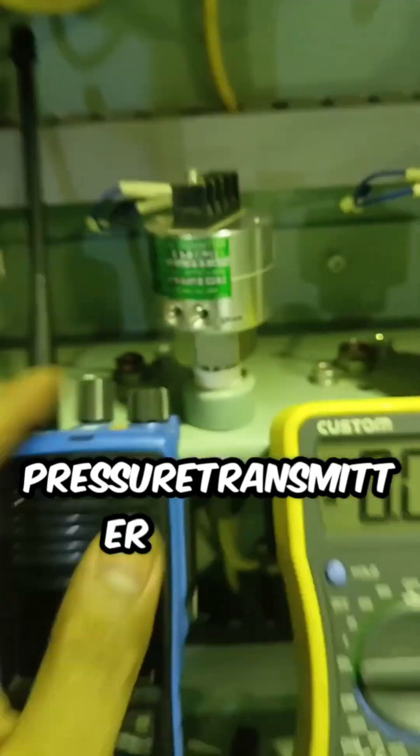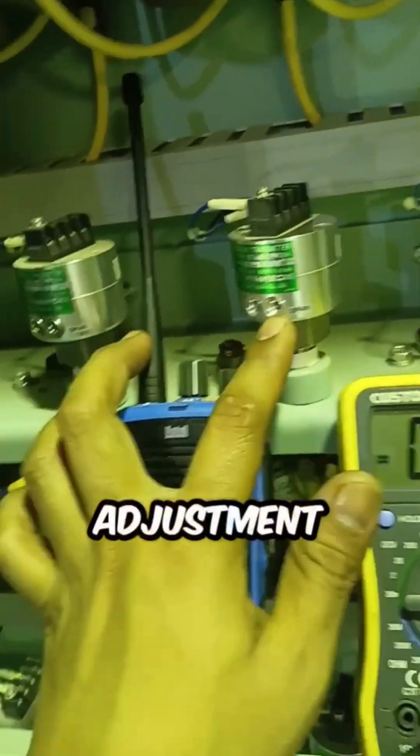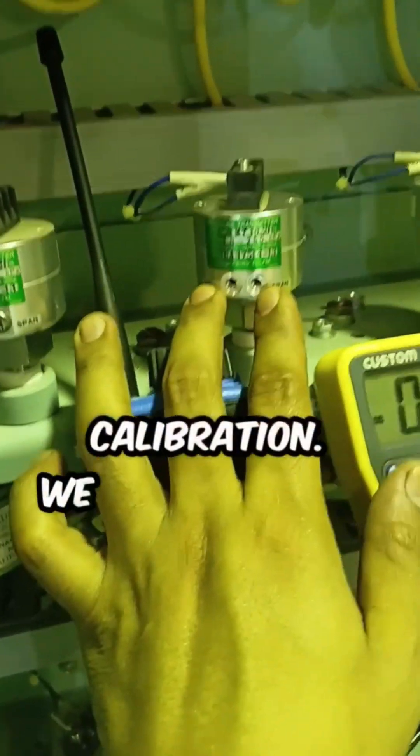I have here another type of digital transmitter which is having an adjustment for calibration. So from zero to five.